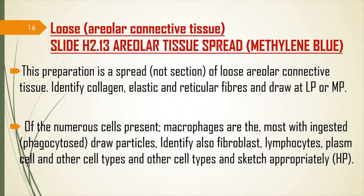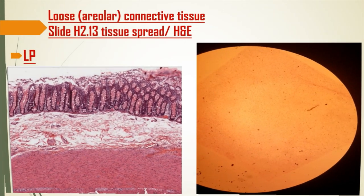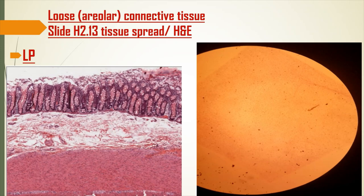Next is loose areolar connective tissue. In this preparation you need to identify collagen, elastic, and reticular fibers. Draw it at both low and high power. You will also see macrophages that have ingested particles and fibroblasts. Loose areolar connective tissue is found beneath the skin — beneath the dermis — and is also known as the hypodermis or subcutaneous layer.